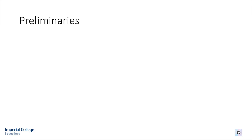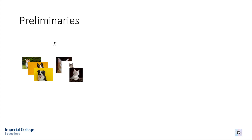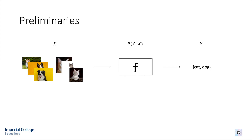I would like to start with a short introduction to machine learning and causality. In the machine learning world, and more specifically in a classification task, we have some input data — here the pictures of cats and dogs — and our goal is to learn a function that predicts the output label, in this case whether this is a cat or a dog. In essence, it is a statistical model that tries to estimate the conditional probability P of Y given X using an appropriate objective function.